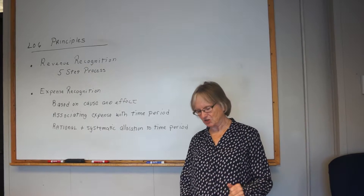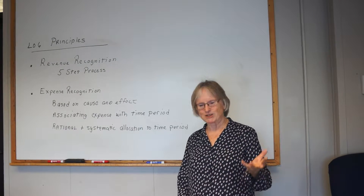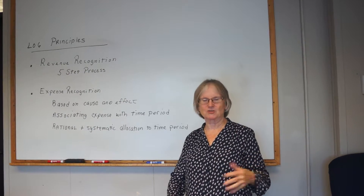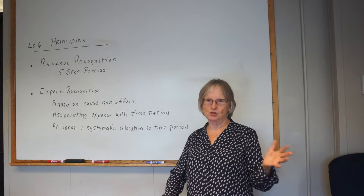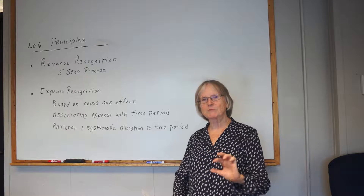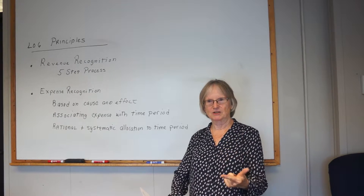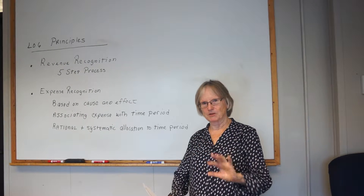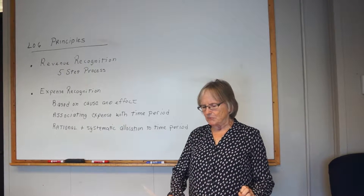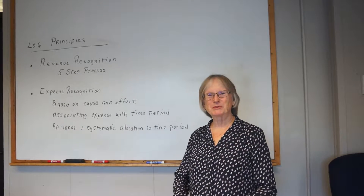You have to identify the contract with the customer, identify the separate performance obligations, determine the transaction price, and then allocate that transaction price among the different performance obligations. For example, you sell a stove — it comes with a warranty and installation. So there are three separate performance obligations: sell the stove, install it, and do the warranty. You attach some of the purchase price to each of those — you allocate it. We'll get a lot more into that in chapter 18, but that is one of the principles we'll be working with.